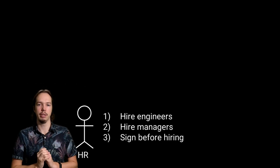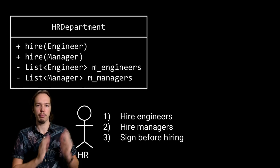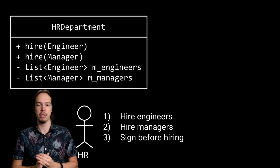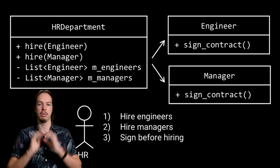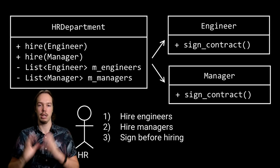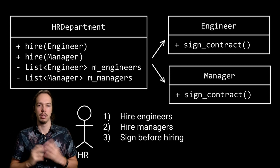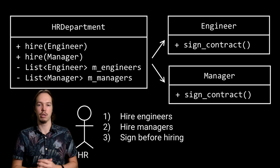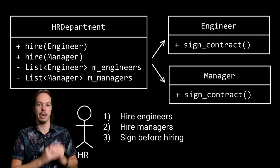So we come up with the following design. You have the HR department class, which takes care of the hiring. Keeping into account good object-oriented programming practices, we create separate classes — one representing the engineer and one representing the manager. The hire functions in the HR department class will simply accept an instance of either engineer or manager, invoke the sign contract function on them, and then add this manager or engineer to the appropriate list.